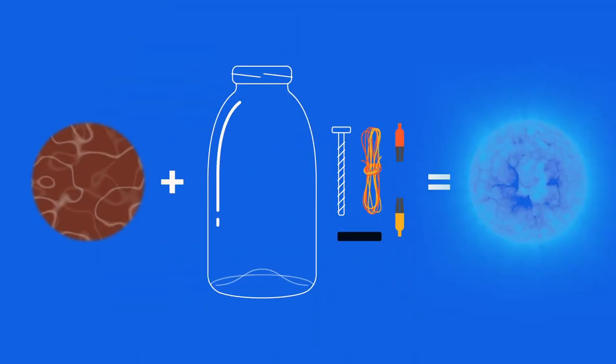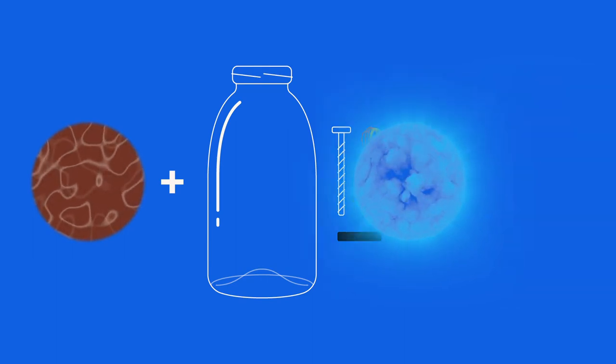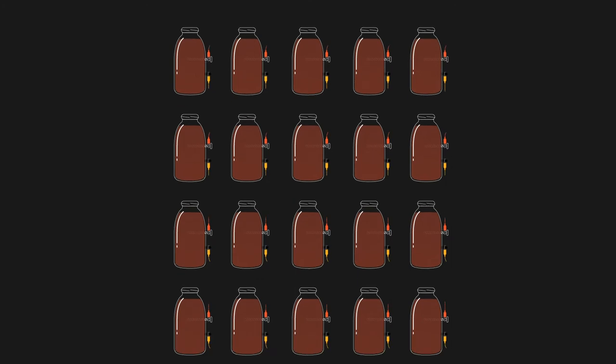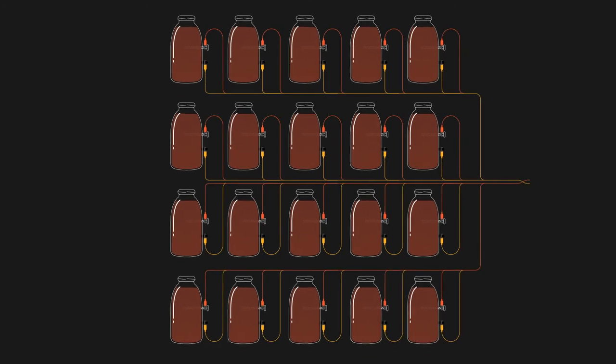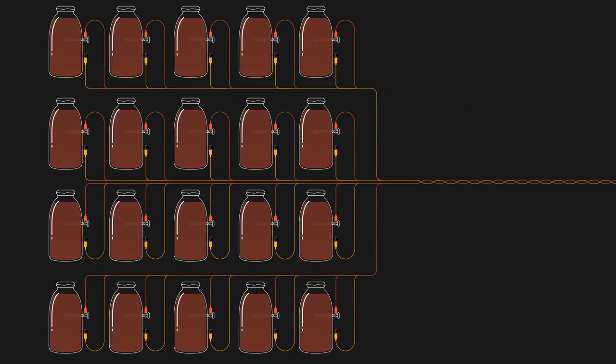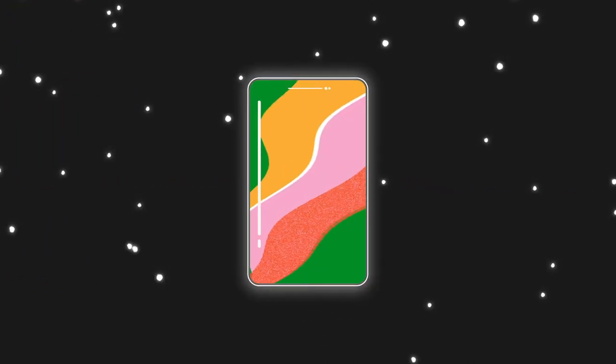So all you need is dirt and a few components to supply energy. Each MFC produces a small amount of electricity. By connecting lots of them together, it's possible to obtain a current that could be used to power small devices like LED lights or charge mobile phones.